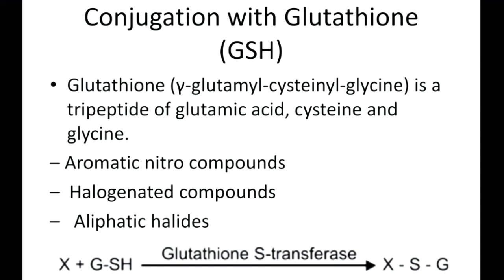Conjugation with glutathione: glutathione is a tripeptide consisting of three amino acids. It participates in conjugation reactions in its reduced form, called GSH. When GSH binds with xenobiotic X, the reaction is catalyzed by glutathione S-transferase, forming XSG — the conjugated form of glutathione with the xenobiotic.